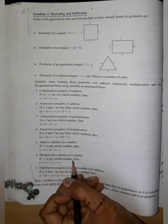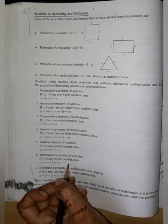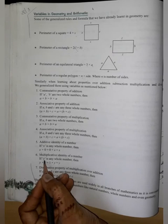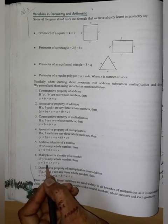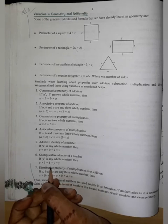Multiplicative identity of a number: if Y is any whole number, Y into one is equal to one into Y is equal to Y. Multiplying any digit by one gives the same digit.